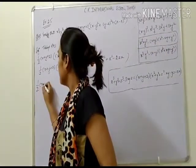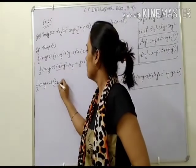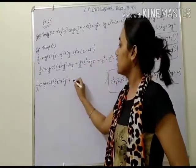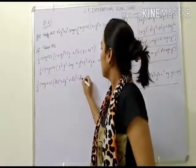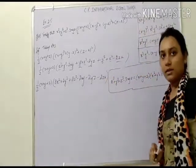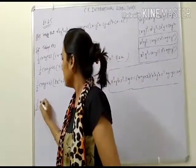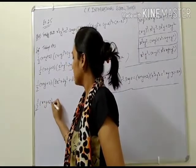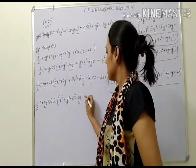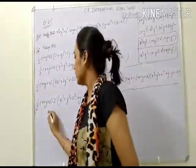Now simplify: one-half into x plus y plus z, into x squared plus x squared gives 2x squared, y squared plus y squared gives 2y squared, z squared plus z squared gives 2z squared, minus 2xy, minus 2yz, minus 2zx. All these terms have 2 common — take 2 out as common factor. The 2 and one-half cancel.